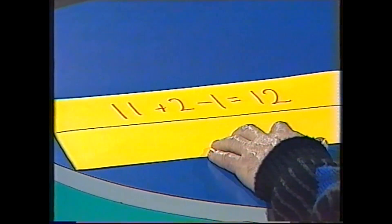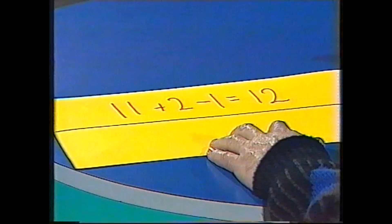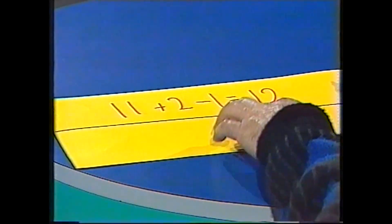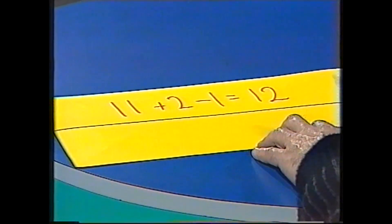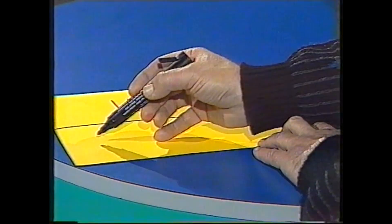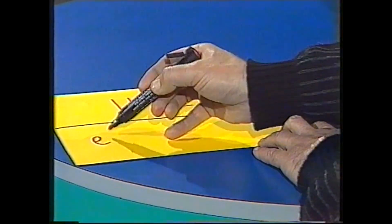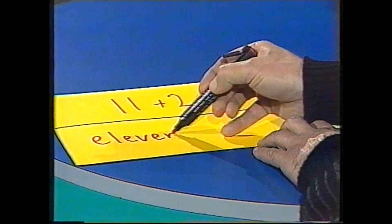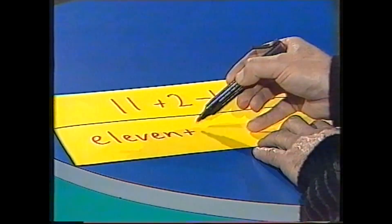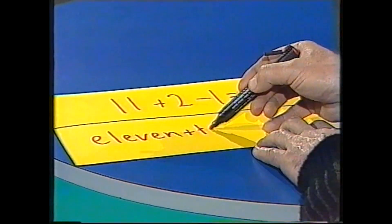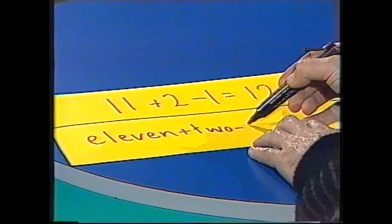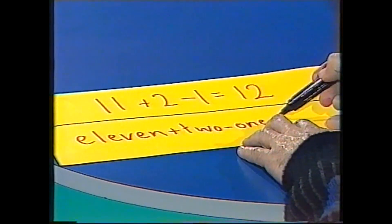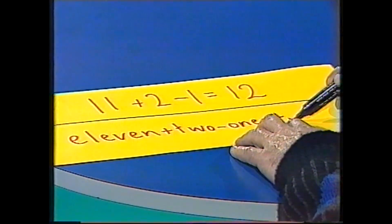But imagine that you had to calculate it not using numbers, using letters only. Well, it still comes to the same thing. Let's write it out: 11 plus 2 minus 1 equals 12.